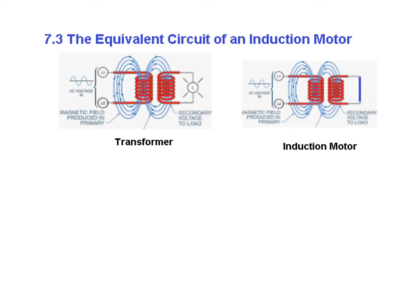To understand the equivalent circuit of an induction motor we have to understand the transformer circuit, because there is a lot of similarity between a transformer and an induction motor. In a transformer we have two coils, primary and secondary. The primary is connected with the source and the secondary is connected with the load. In the same way, in an induction motor we have a primary — or we call it a stator circuit — and then we have a rotor circuit. The only difference is that in the transformer the load is connected with the secondary, but in the induction motor we short-circuit the load.